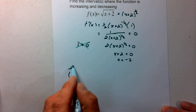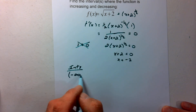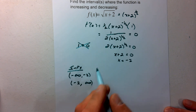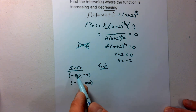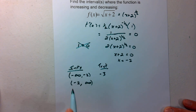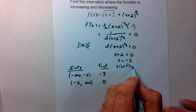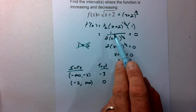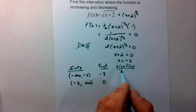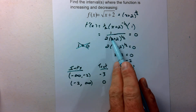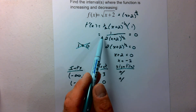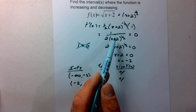Finding our intervals: we start at negative infinity and go to negative 2, which is our only critical value, giving us two intervals. Test values: negative 3 for the first interval, and 0 for the second. Looking at the sign of f prime of x — our numerator is always a positive 1, and the 2 in the denominator is always positive, so those don't affect the sign. For negative 3: negative 3 plus 2 is negative 1, and negative 1 to the one half is the square root of negative 1.